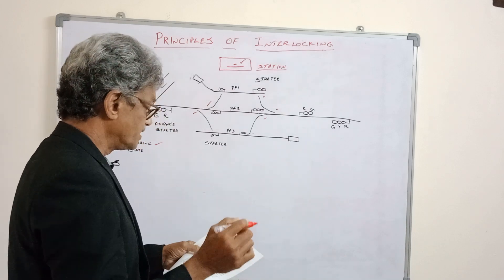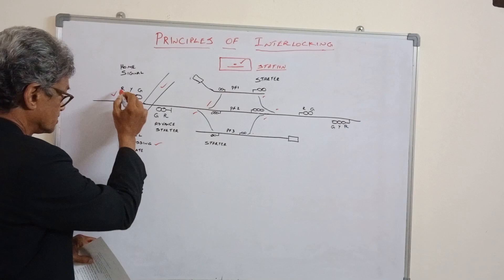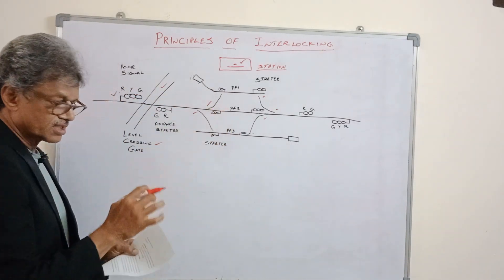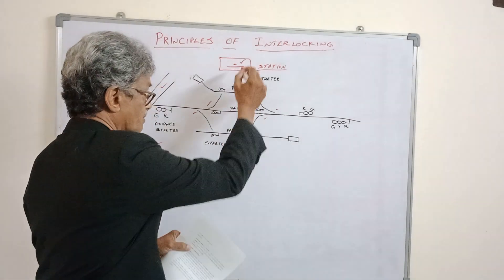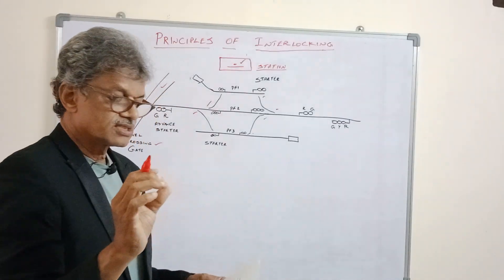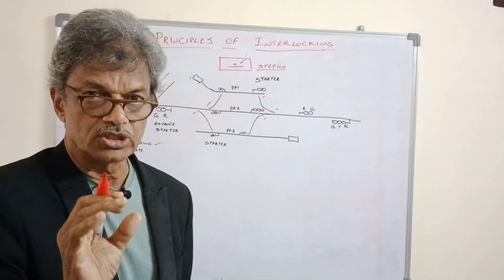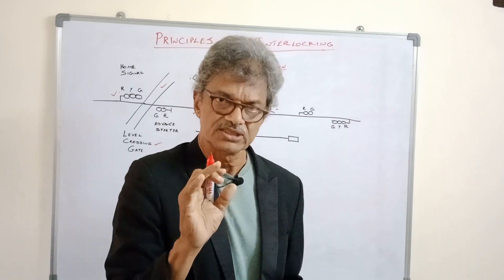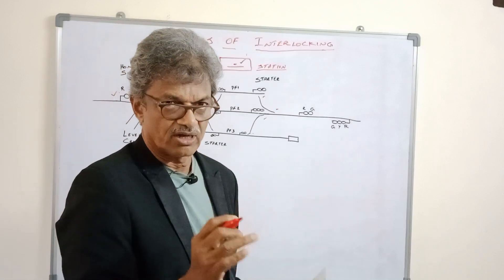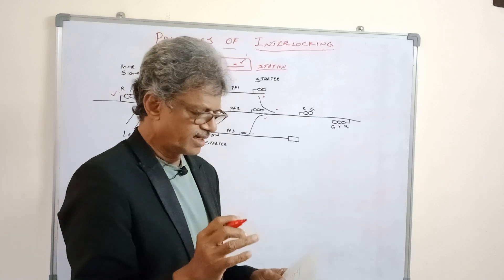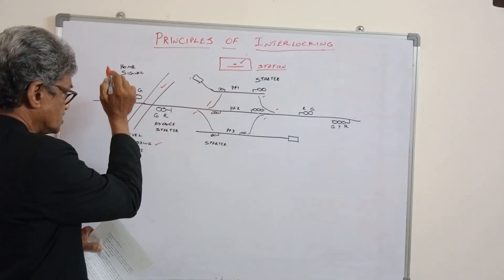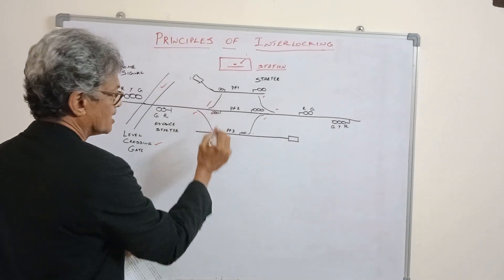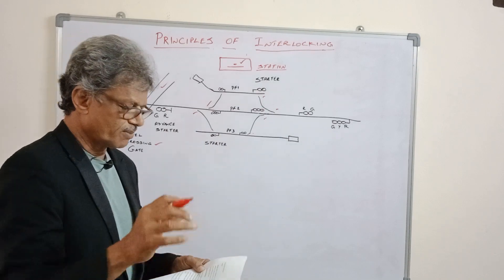All these operations must take place in a proper sequence. All signals, level crossing gates, and points should be operated from a place in a sequence operation to ensure safety. Our main requirement is safety — to make the movements of railways in a safe manner, using a sequence operation of signals, level crossing gates, and points.